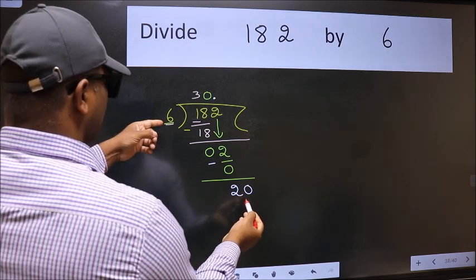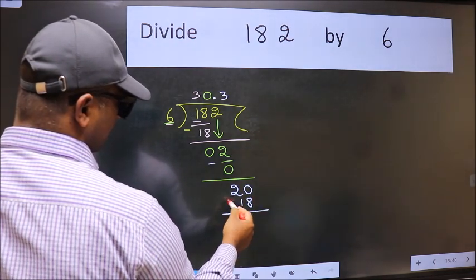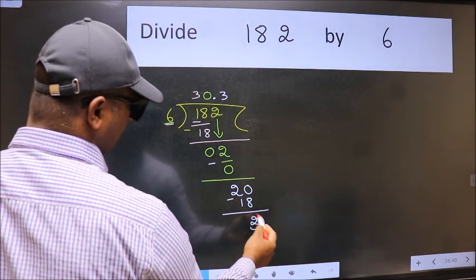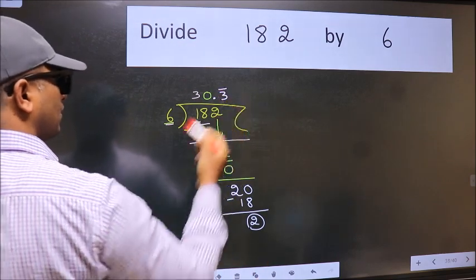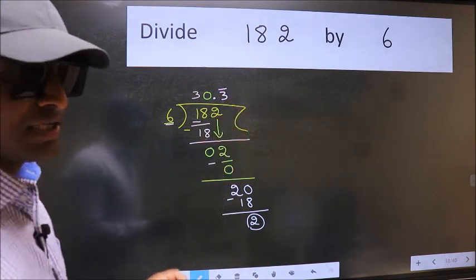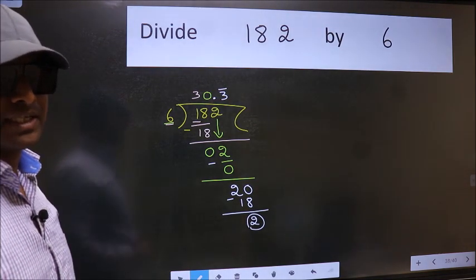A number close to 20 in the 6 table is 6 times 3, which is 18. Now we subtract. We got 2 again. That means we get a bar on this number. Did you understand where the mistake happens? You should not make that mistake.